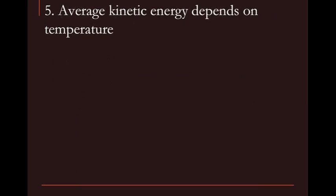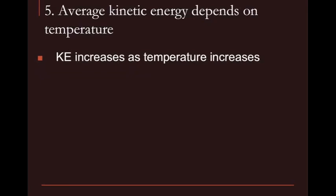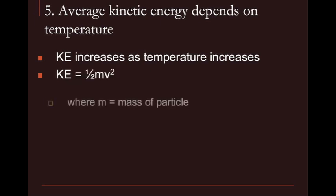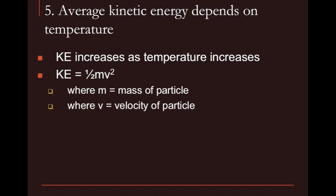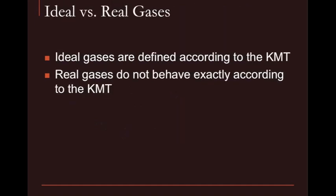The fifth assumption is that the average kinetic energy depends on temperature. Kinetic energy is movement, so if we increase the temperature, we increase the kinetic energy. Kinetic energy equals one-half the mass times velocity squared. At the same temperature, lighter particles have higher speeds than heavier ones — light things move faster than heavy things. Think of football players: a running back is lighter than a lineman, so a running back will run faster.